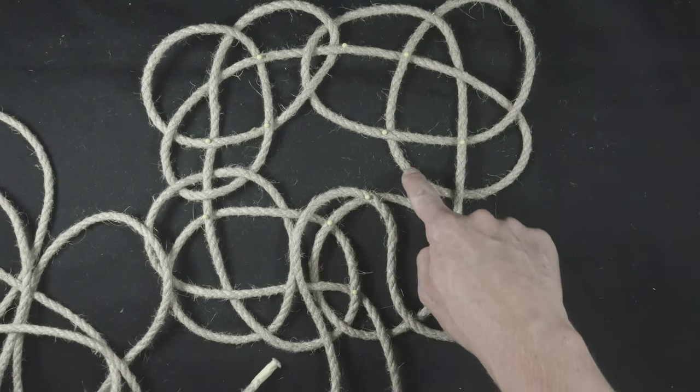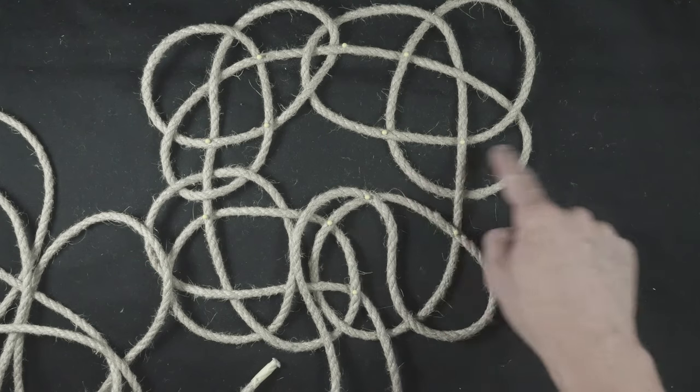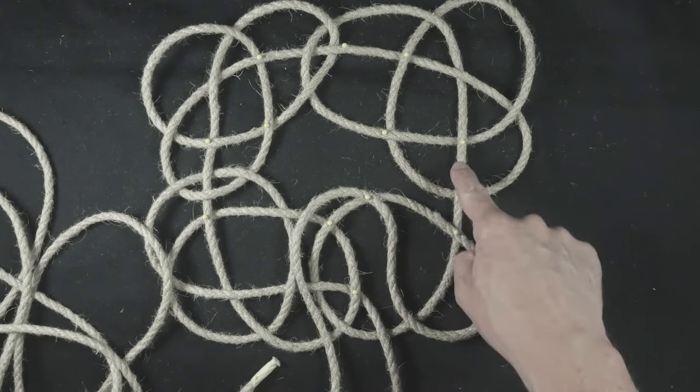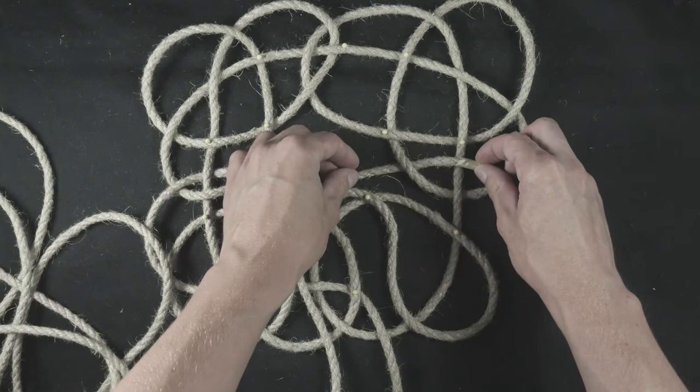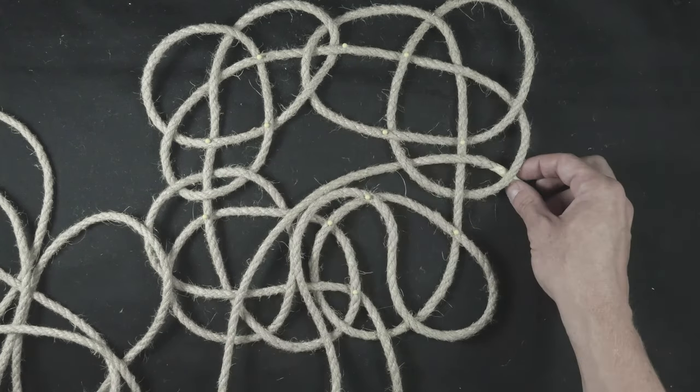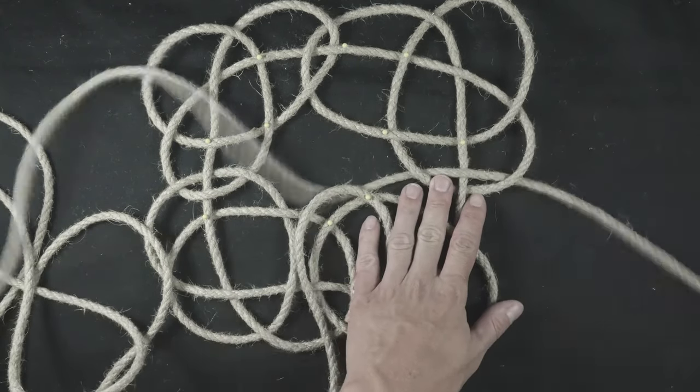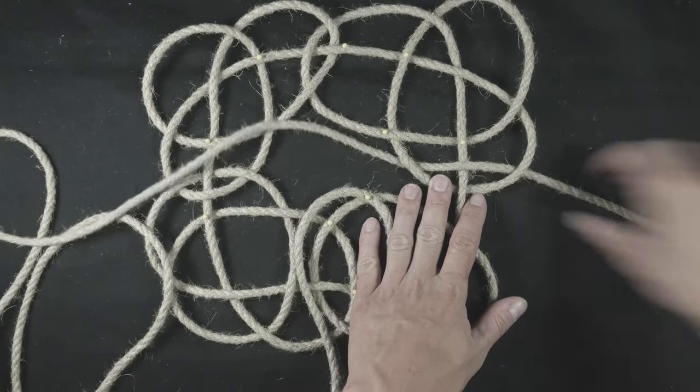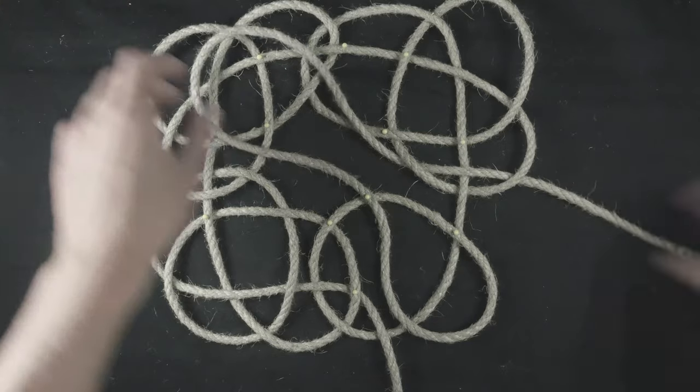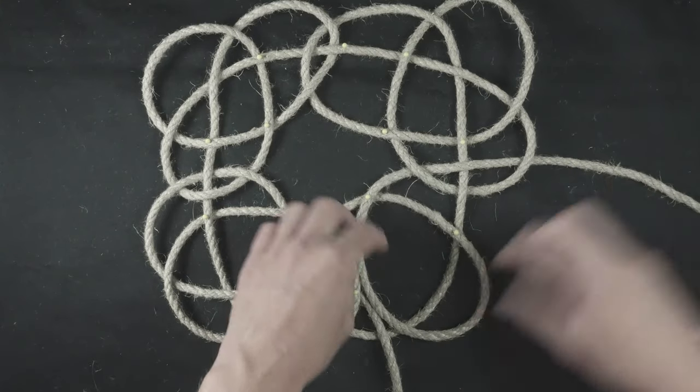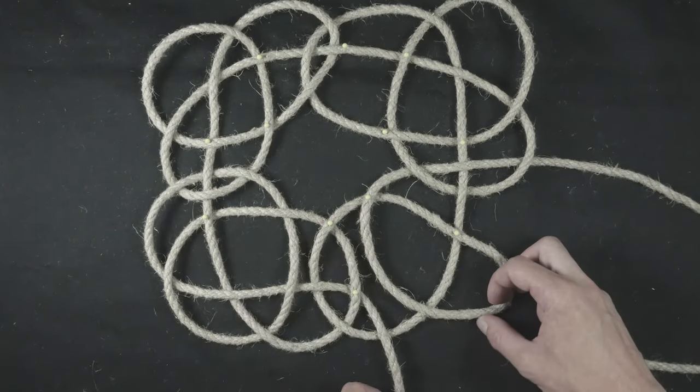We weave through these three strands: over, under, over. Then we connect our bottom right corner to the top right one, weaving through these three strands: under, over, under.